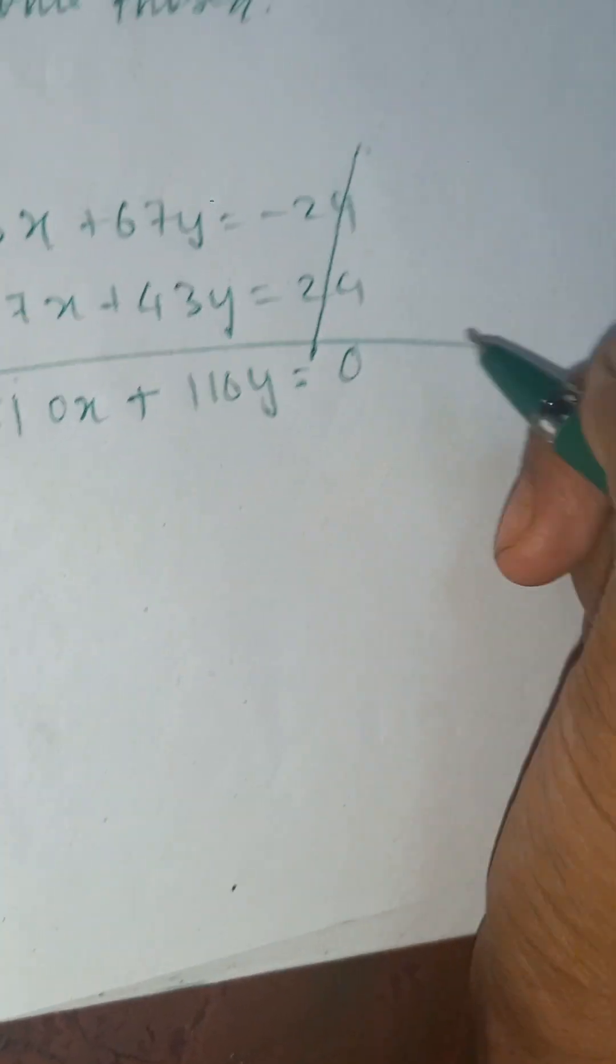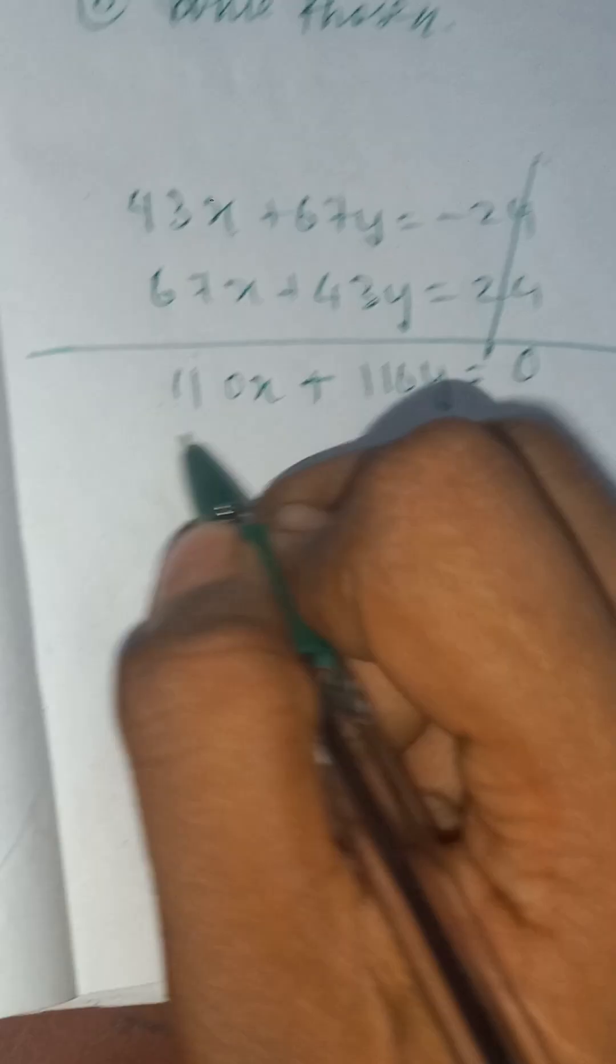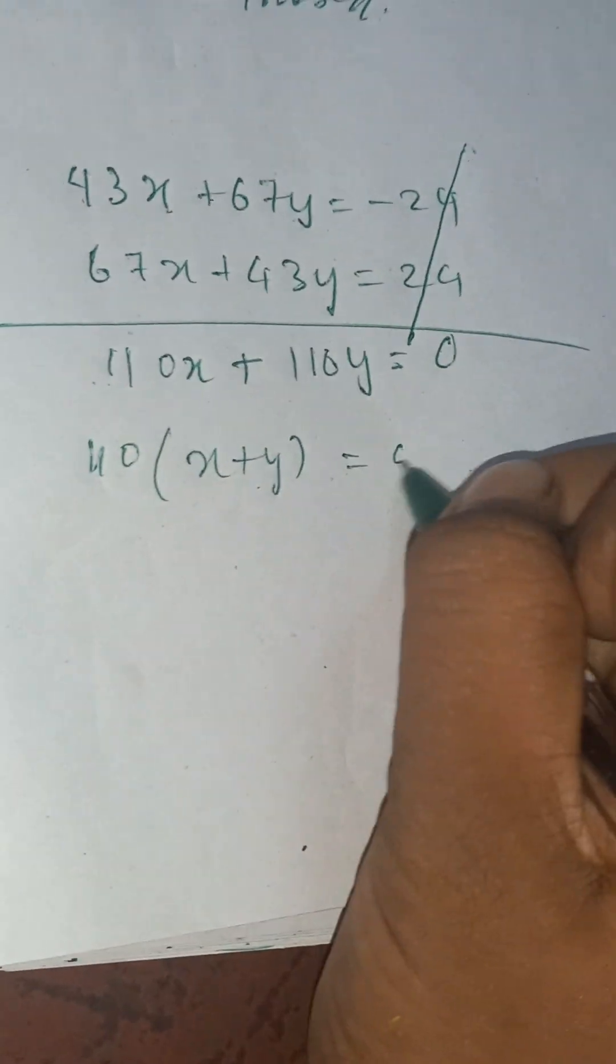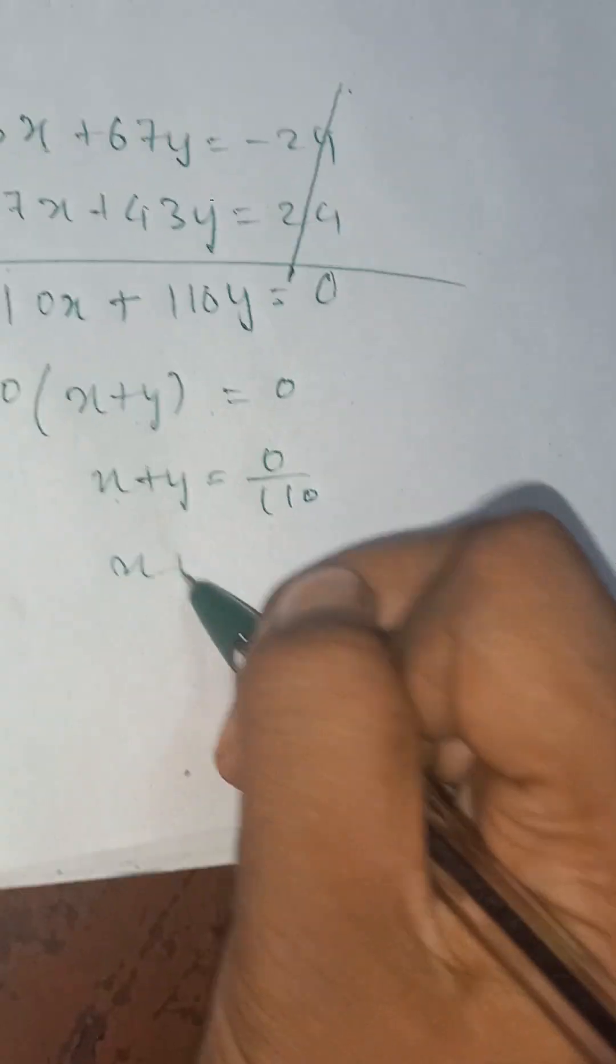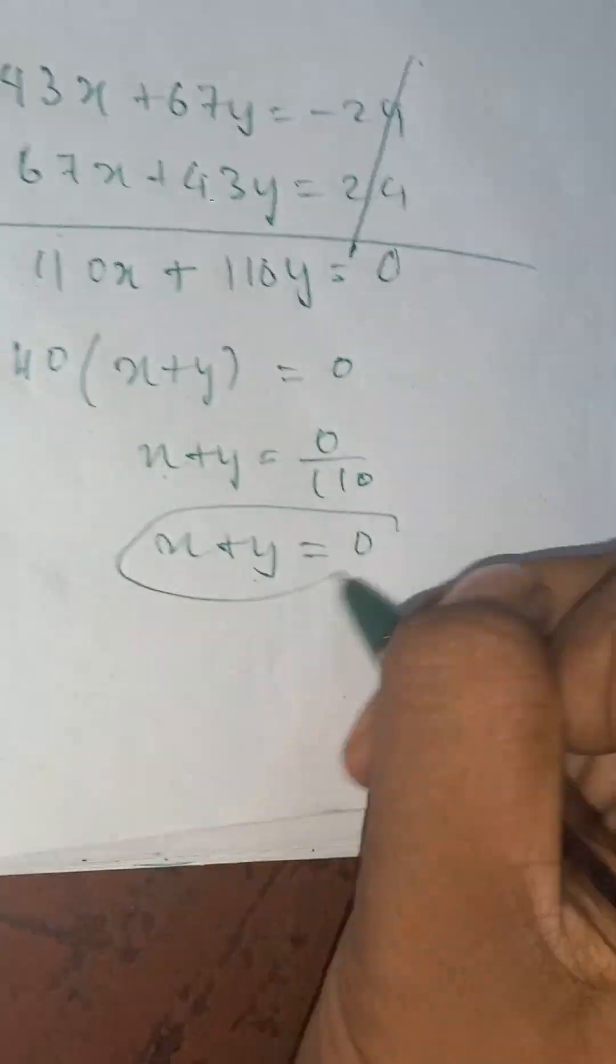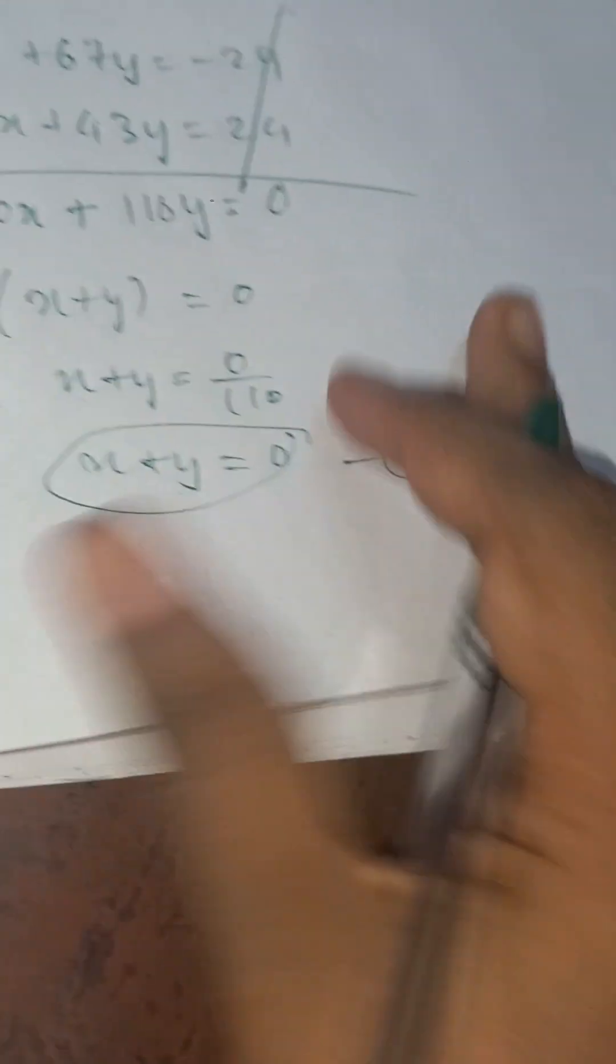If you add, this will get cancelled and it will become equal to 0. Now you can take 110 common: 110(x + y) = 0, so x + y = 0. Consider this the first equation.